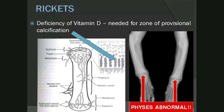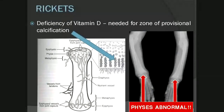Causes of rickets include dietary deficiency, which is less common in small animals these days, or more commonly an enzyme deficiency preventing conversion of vitamin D to its active form, or a receptor malfunction preventing vitamin D from binding and functioning. Sunlight is generally not needed by dogs and cats, though some other species may require it. On imaging, the physes are abnormally widened and the metaphyses flare outwards.